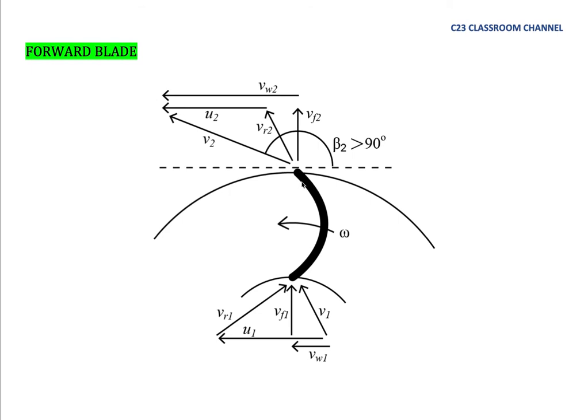This is the forward blade and we could draw the velocity triangle like this. I have explained detail about this in my previous video. This is the velocity triangle at inlet and this is velocity triangle at outlet. The forward blade has blade angle more than 90 degrees.